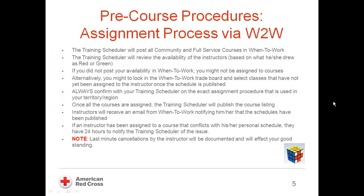At the beginning of April, for example, you should have your availability drawn up for the month of June. If you were not assigned to any courses when a schedule is published, you can go into the When to Work trade board and request courses that have not been assigned to an instructor. You should confirm with your training scheduler the exact assignment procedures, including the deadlines to post your availability, the trade board rules, and any scheduling publishing dates.